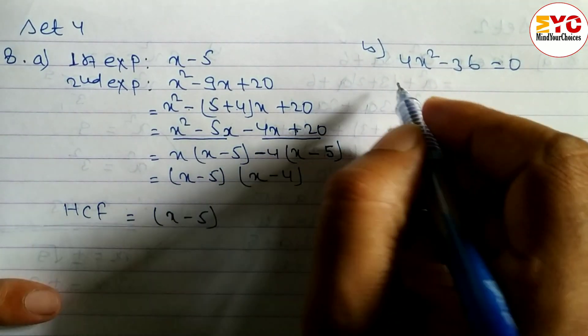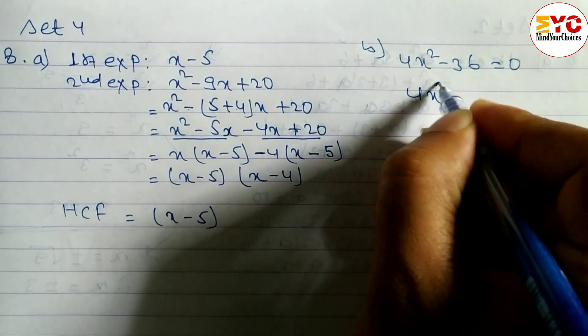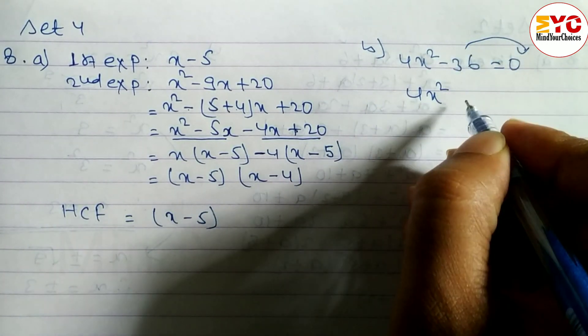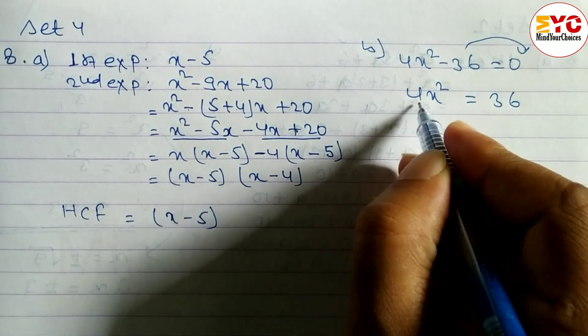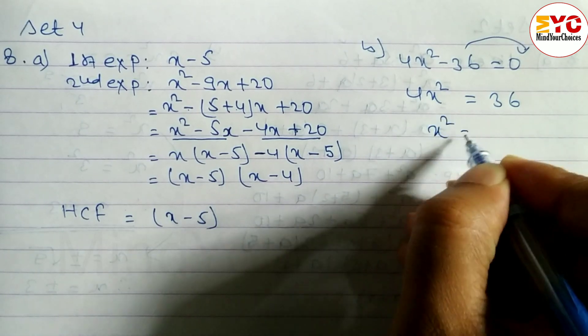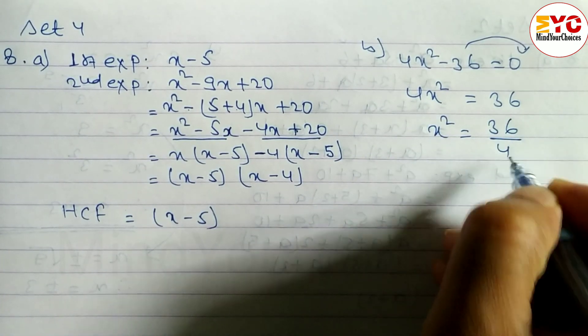So, 4x square, take 36 to the right side, is equal to what? 36. Now, divide by 4. x square is equal to 36 divided by 4.